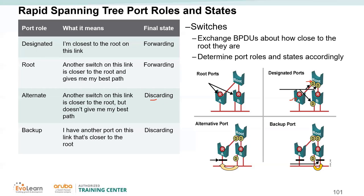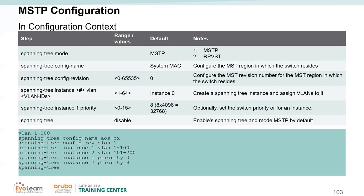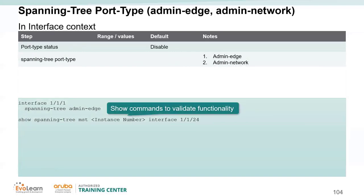To configure MSTP correctly, you need to set: a config name, a revision number, and instance-to-VLAN mapping. All switches in the same MSTP region must share these parameters. Note: the VLANs don't need to exist yet, but the instance, revision, and config name must match across all switches in the region.